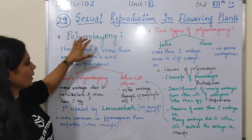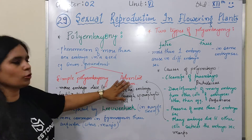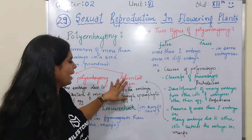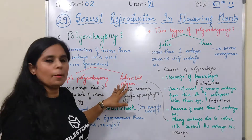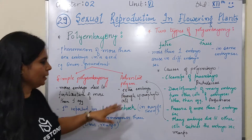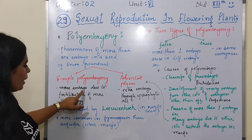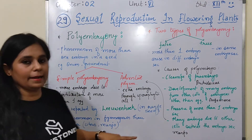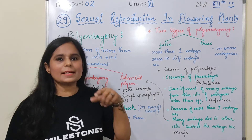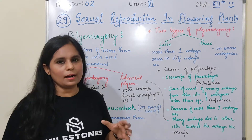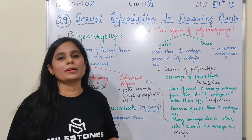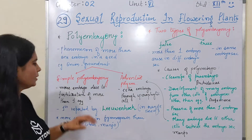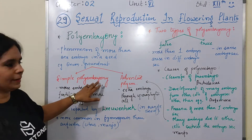Polyembryony can be of two types: simple polyembryony and adventive polyembryony. In simple polyembryony, more embryos arise due to fertilization of more than one egg. If more than one egg is present and fertilized, it is called simple polyembryony.